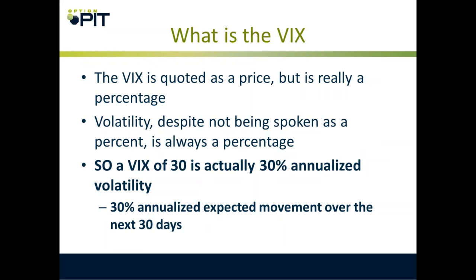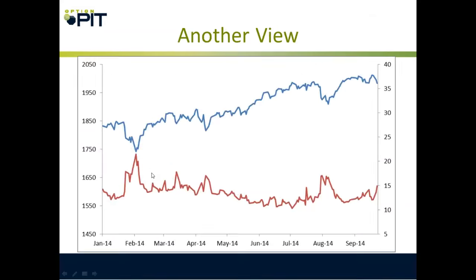The VIX is quoted as a price but is really a percent. Volatility, despite not being spoken as a percentage, is always a percentage. A VIX of 30 is actually 30% annualized volatility — 30% annualized expected movement over the next 30 days. We annualize numbers all the time. Here's a look at VIX and S&P for 2014. I like this because you can see the mirroring — the red is VIX and the blue is the S&P.